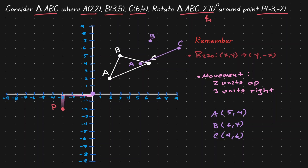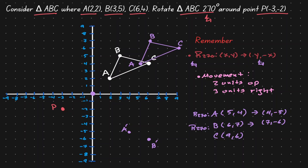Now let's create our new triangle. Now that we've moved the whole problem with the center of rotation at the origin, we can start applying the rules for a 270-degree rotation. A rotation of 270 degrees on point A gives us its new location. Let's place that down in our graph. A rotation of 270 degrees on point B, according to our rule, gives us its new location. Let's place that down and connect those points.